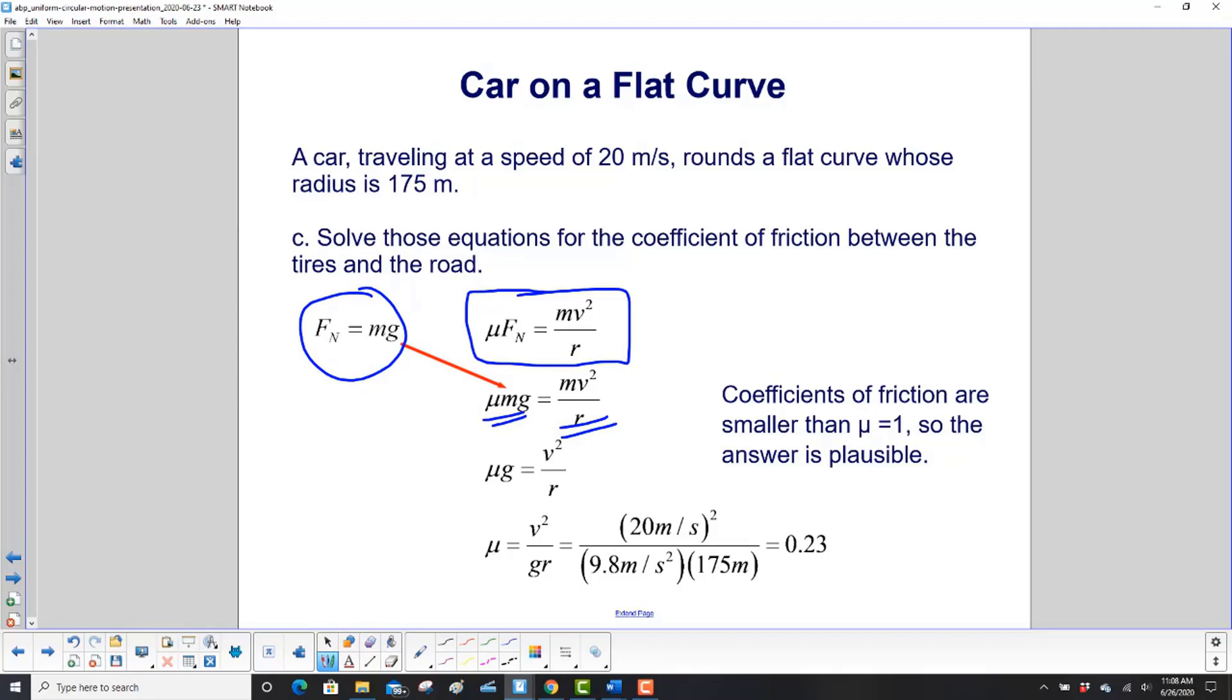What's nice about that is the masses cancel. It doesn't matter what the mass of the car is, at least for this level of physics. So we have μg equals v² over r. And what are we trying to solve for? The coefficient of friction, which is μ. Divide both sides by g. And here we go, here's our final equation. We plug in the numbers and we get a coefficient of friction of 0.23.